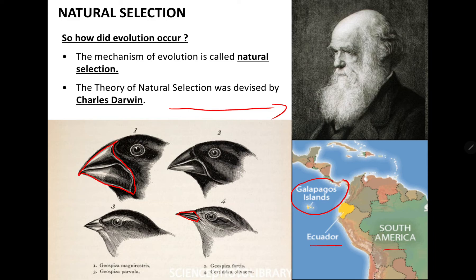The different sizes and shapes of beaks were related to the type of food the birds were able to consume. Number one has a really strong, hard beak and probably had to survive on harder food materials. Number four has quite a pointy, sharp, and small beak, so it probably was eating smaller foods. As a result, the beaks more suited to the type of food available on each individual island became more prominent and more common, and this is an example of natural selection.